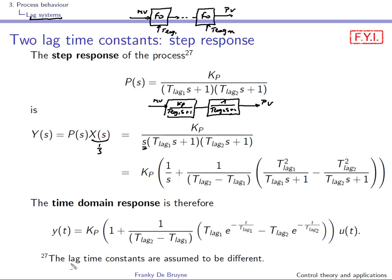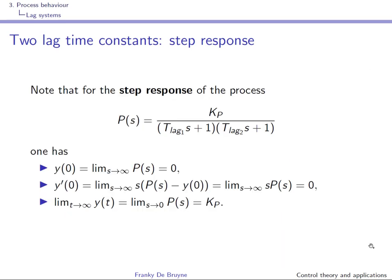Here we assume that the two lag time constants are different. If they are not, you have to redo the calculations and you'll have a different partial fraction expansion. Assuming these time constants are different, you obtain the partial fraction expansion, then do the inverse Laplace transform to get the time domain response. Instead of using the exact step response, we'll use information about the step response at the origin, information on the output, and then information when t tends to infinity, from the initial and final value theorems.